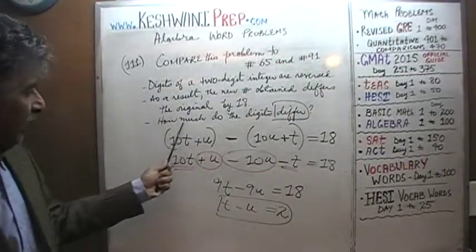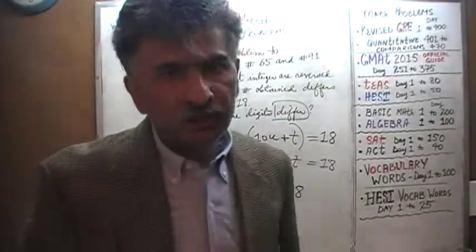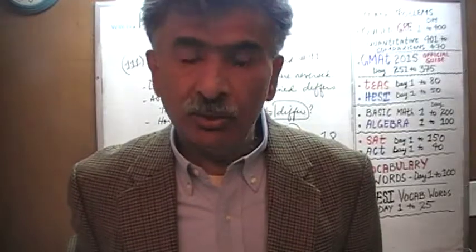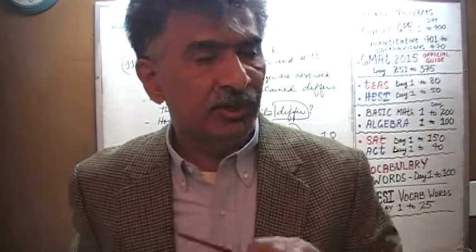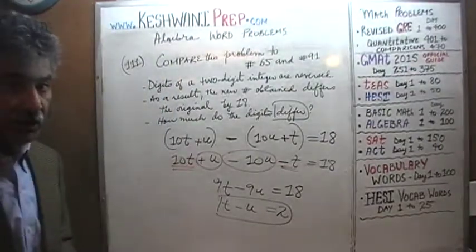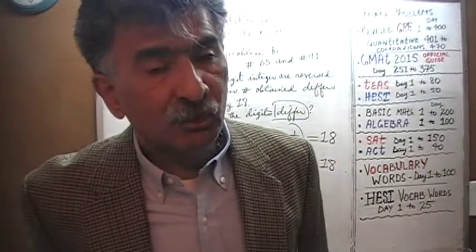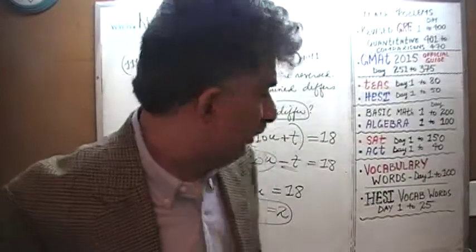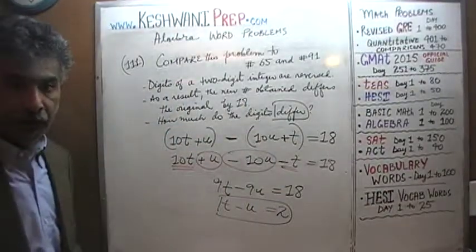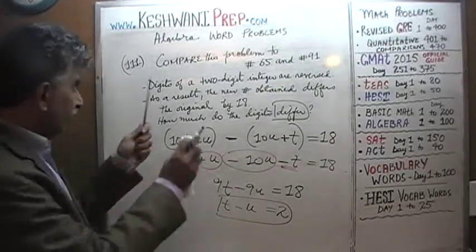The question was: by how much do the digits differ? The digits differ by 2. Now, what is that integer? The answer is we do not know — all we know is that the two digits differ by 2. There are several possible scenarios. The question is not asking us what is that two-digit integer. If it were, there is no way to figure it out because we only have one equation and two unknowns. They are simply looking for the difference between the two digits.